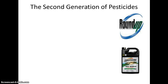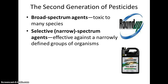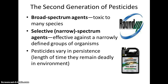Some examples include Roundup and most chemicals you can buy for your yard or home. If a pesticide is broad spectrum, it is toxic to many species — Roundup, for instance, kills any type of plant. If it is selective or narrow spectrum, it kills fewer organisms; you can see one on the slide that targets ants specifically. Pesticides also vary in persistence — how long they remain deadly in the environment. Some chemicals break down quickly, while others last a very long time.